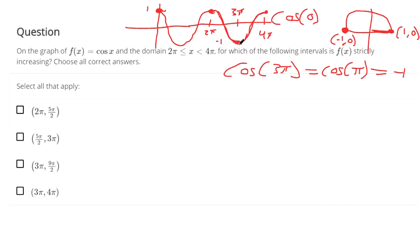So at 3 pi, this thing starts increasing until we get to 4 pi. So this is our interval where it is strictly increasing. Let's see if there's other intervals, though.